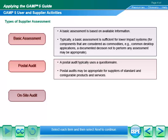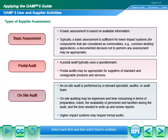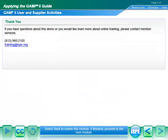There are three main options for performing a supplier assessment: Basic Assessment, Postal Audit, and On-Site Audit.